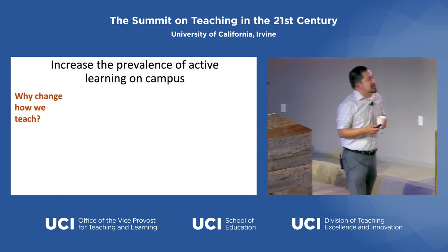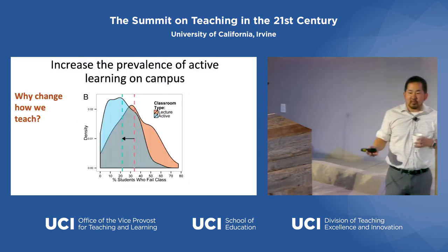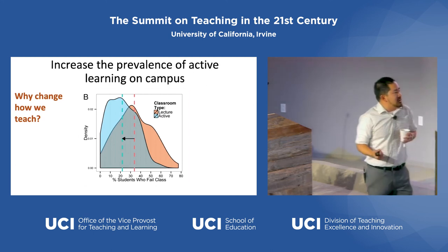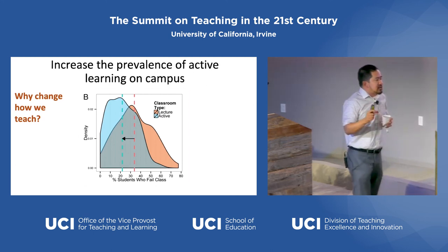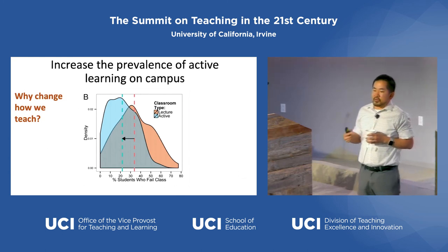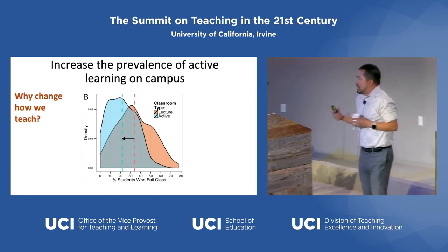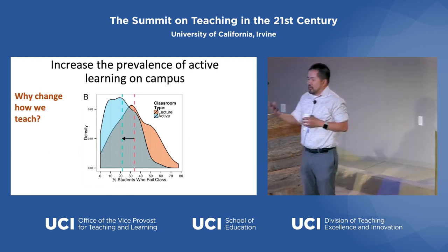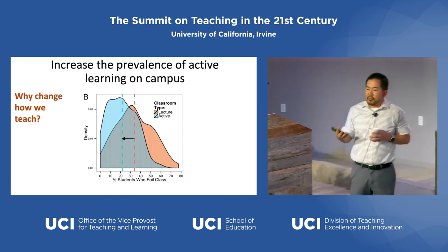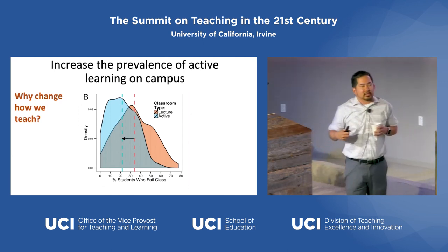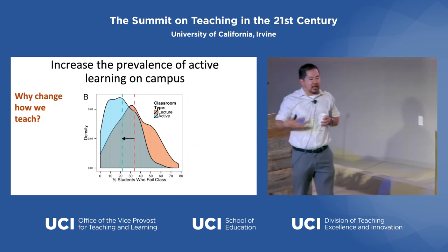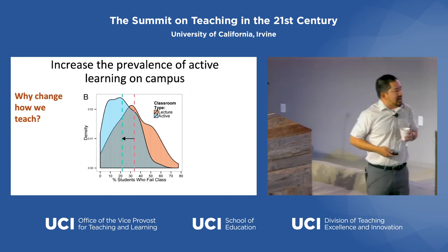There's increasing evidence that active learning is disproportionately beneficial for students who are traditionally underrepresented in higher education, and this is really important here at UCI. We're 50% first generation, about 40% of our students are low income, and about a third are underrepresented minorities. So it's not enough to say welcome to UCI — go figure it out. We want to make sure that everyone has the opportunity to succeed on our campus.